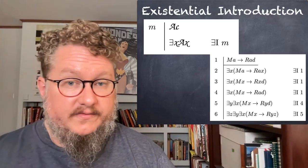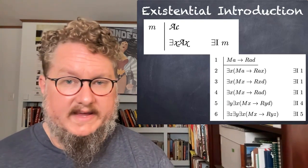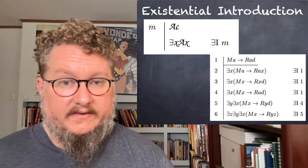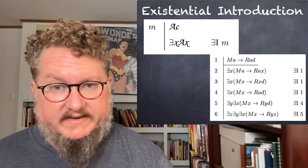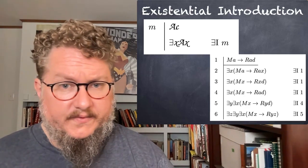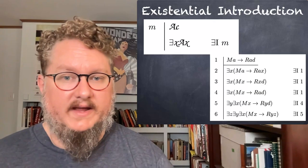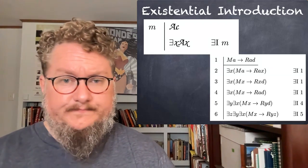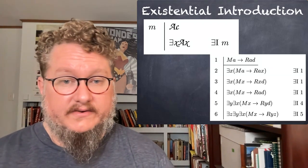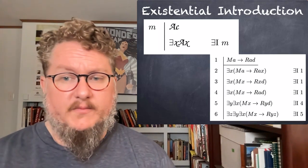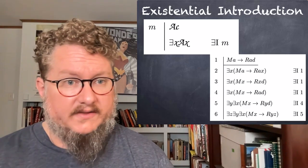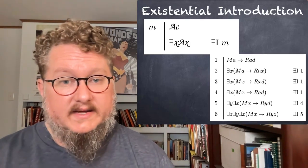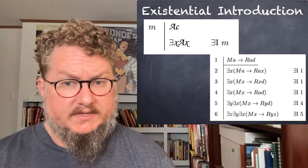On line 2, for example, we've replaced just the final D in RAD with an X. Whereas on line 3, we've replaced both A's in MA and RAD with an X. But on line 4, we've just replaced the A in MA, and not the A in the consequent of the conditional. So the X that we introduce with our existential quantifier introduction rule can replace some or all occurrences of our constant C. It's very flexible, and you see in lines 5 and 6 we can even apply the rule multiple times to deal with multiple constants.